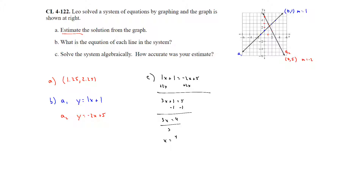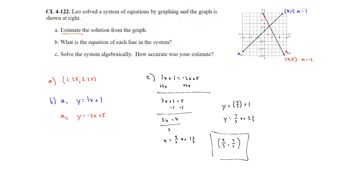Now we need the y value. Substituting into y equals x, y equals four-thirds plus 1 equals seven-thirds, or 2 and one-third. The exact solution is x equals four-thirds and y equals seven-thirds. My estimate was 1.25 and 2.25, while the exact values are 1.3 repeating and 2.3 repeating — so it was close. This shows why it's important to know how to solve systems algebraically, since graphing doesn't always show the exact point of intersection.